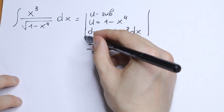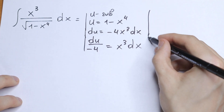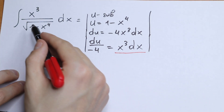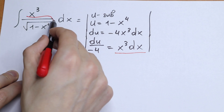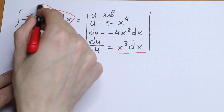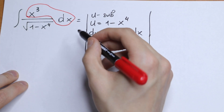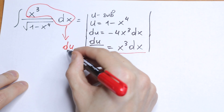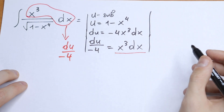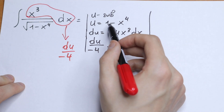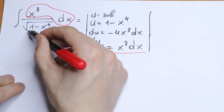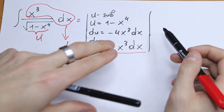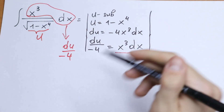Take a look at our integral. The x cubed dx can be replaced by du over minus 4, and 1 minus x to the fourth power is our u. So this is a really good u-substitution right here.